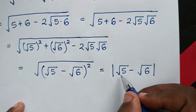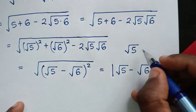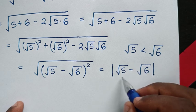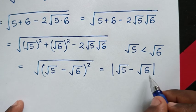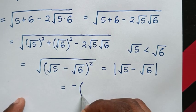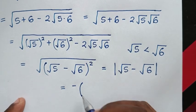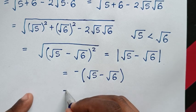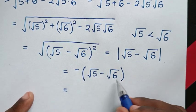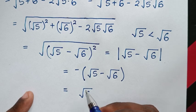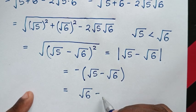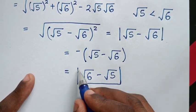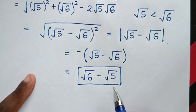Now, since √5 is less than √6, the expression (√5 - √6) is a negative value. To make it positive, we negate it: -(√5 - √6) = √6 - √5. Therefore the final answer is √6 - √5, which is a positive value.